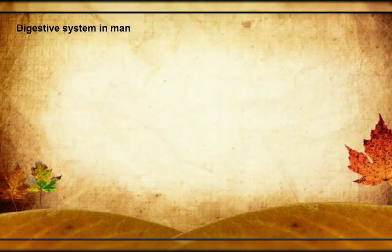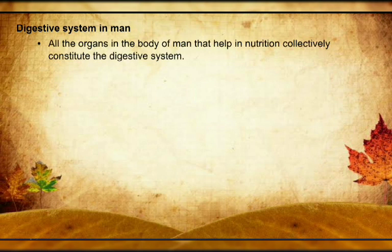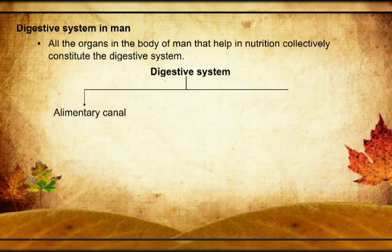The next heading is digestive system in man. The digestive system is a system that includes two parts: number one is called the alimentary canal, and number two is called digestive glands.